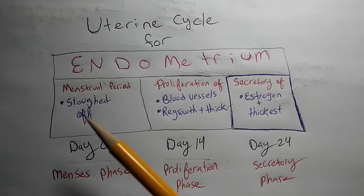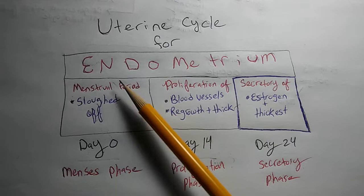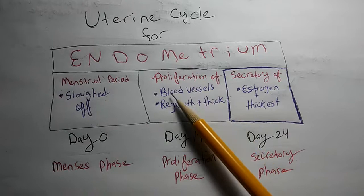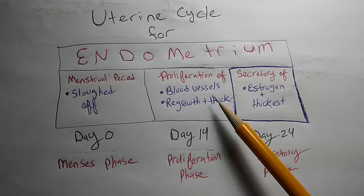The menstrual period, what occurs in this area is the sloughing off of the endometrium, the proliferation of blood vessels, or the regeneration of blood vessels occurs in the endometrium, and also the regrowth of the endometrium, plus the thickness of the endometrium.